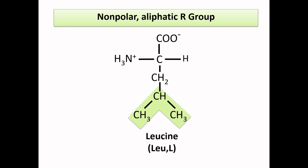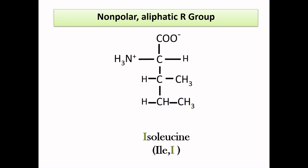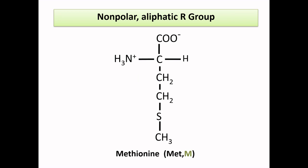Leucine is similar to valine but it has one extra methyl group in the side chain. Isoleucine is the isomer of leucine — it has the same number of methyl groups but the arrangement is a little different, and if you see its structure it looks like an eye, so remember this eye-shape structure as isoleucine. Methionine has sulfur in its side chain, and this sulfur is present in the middle of its side chain, so remember the amino acid having sulfur in the middle as methionine.